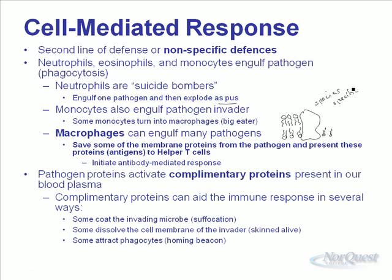The pathogen protein activates complementary proteins present in our blood plasma — they're always there and react to foreign invaders. They can do a few things: they can coat the outside of the invader with a protein coat that suffocates the invading microbe, some can actually destroy the cell membrane of the invader, and others act as homing beacons — attaching to a foreign invader to make it easier for neutrophils and macrophages to find and destroy it.